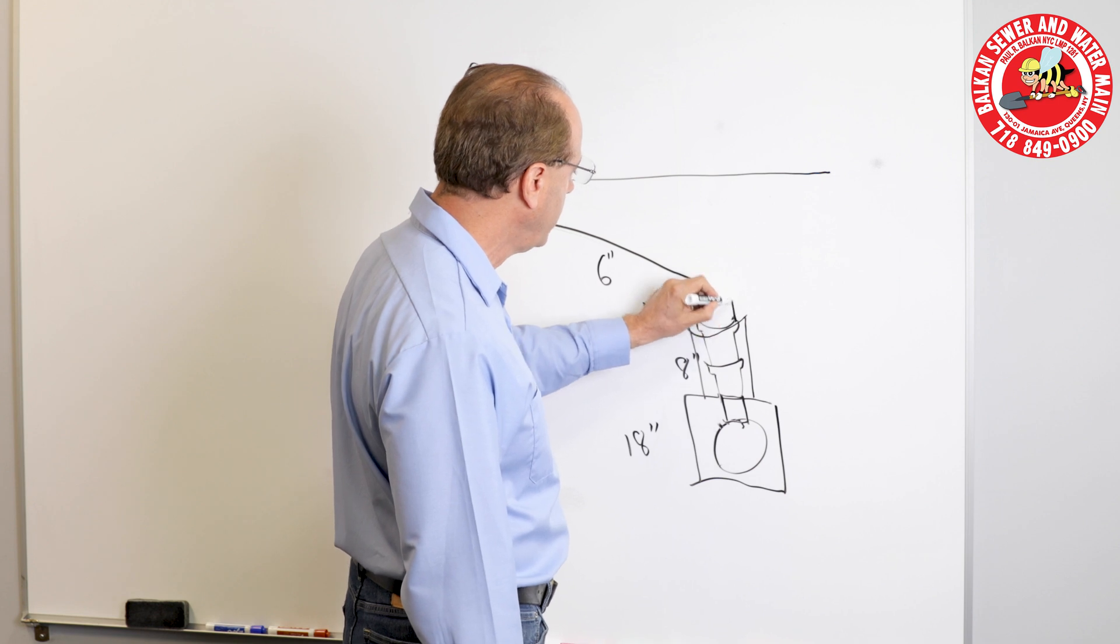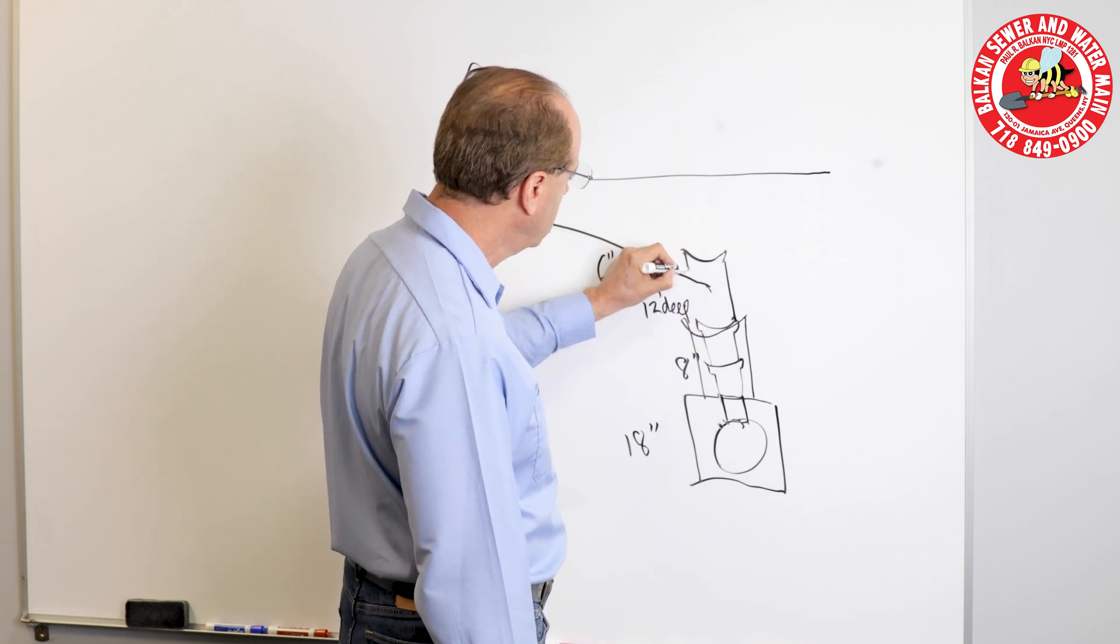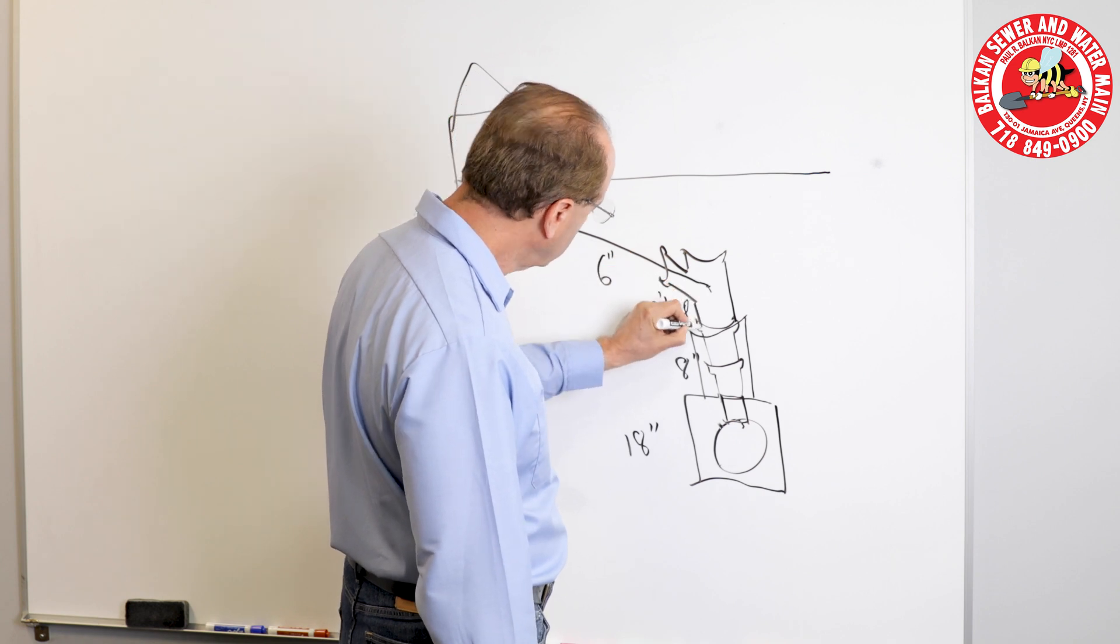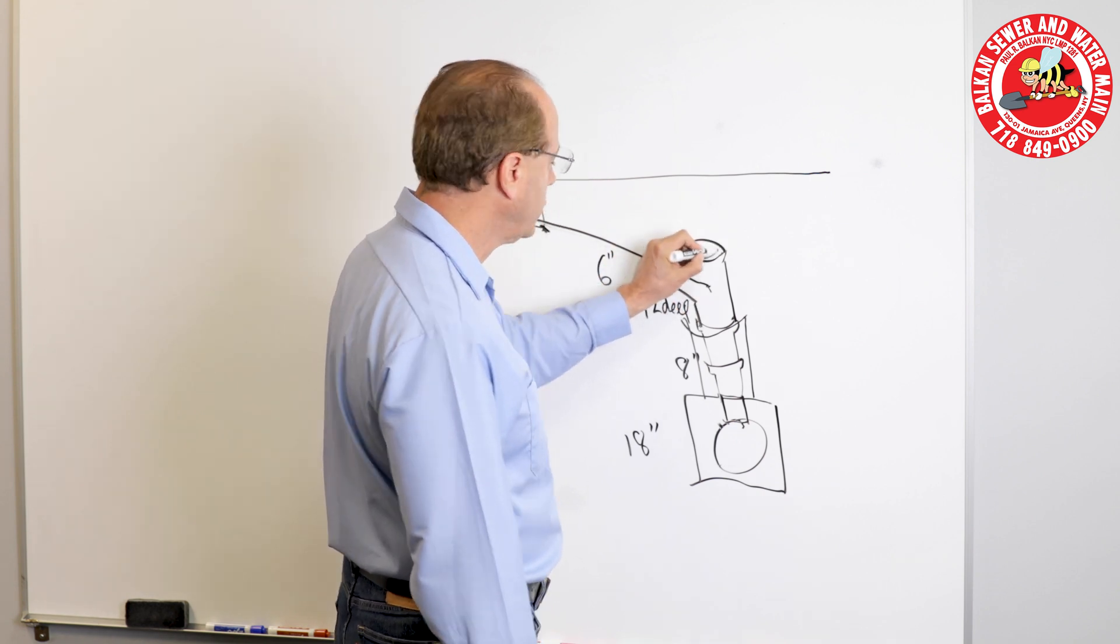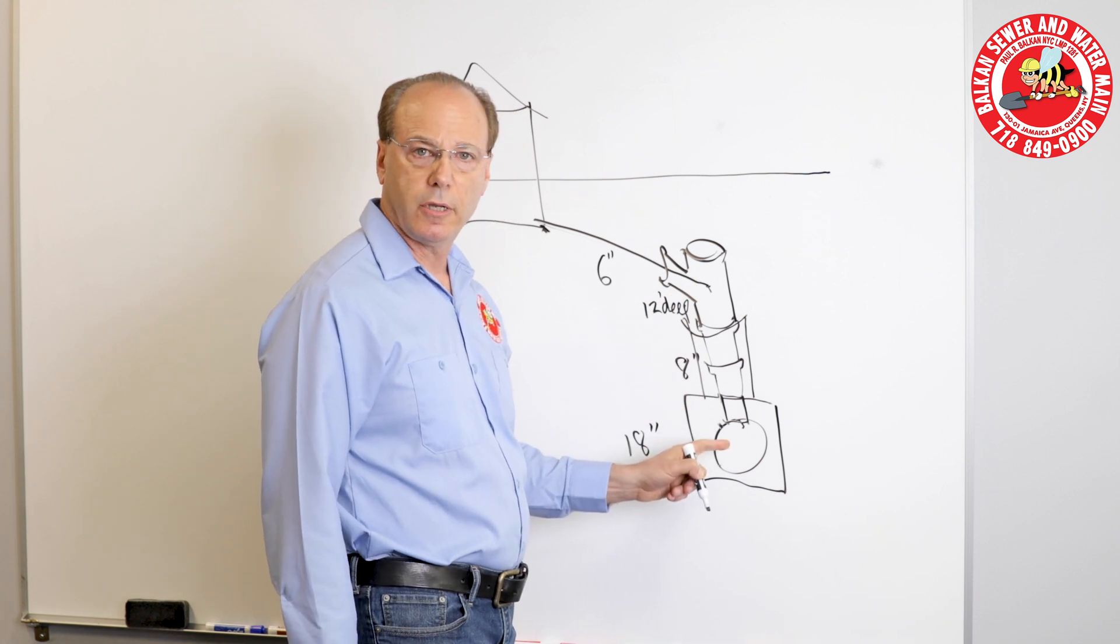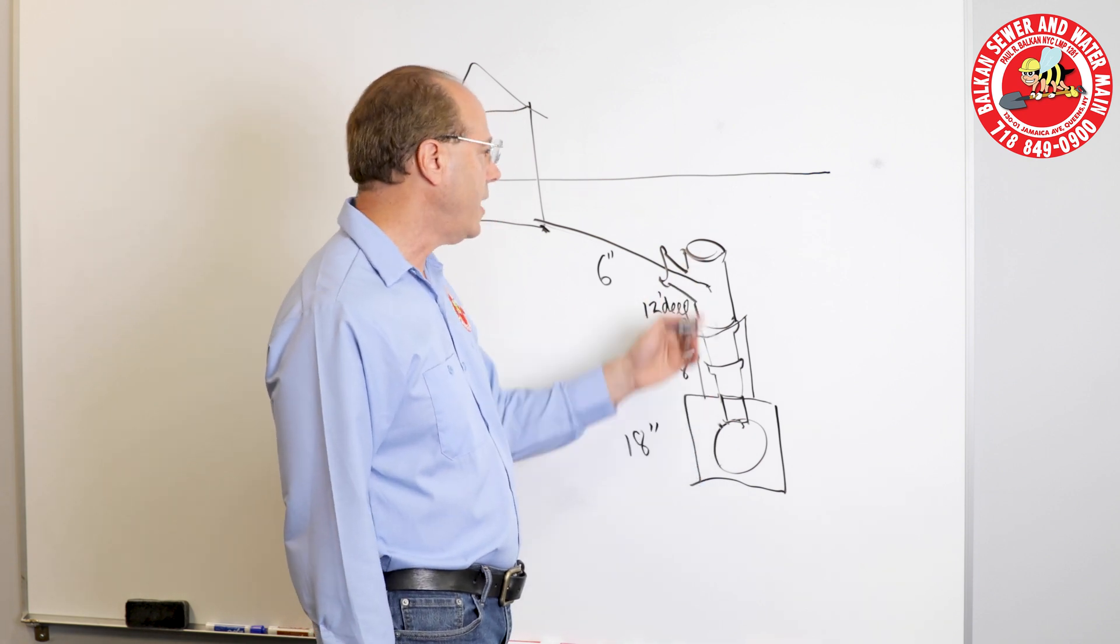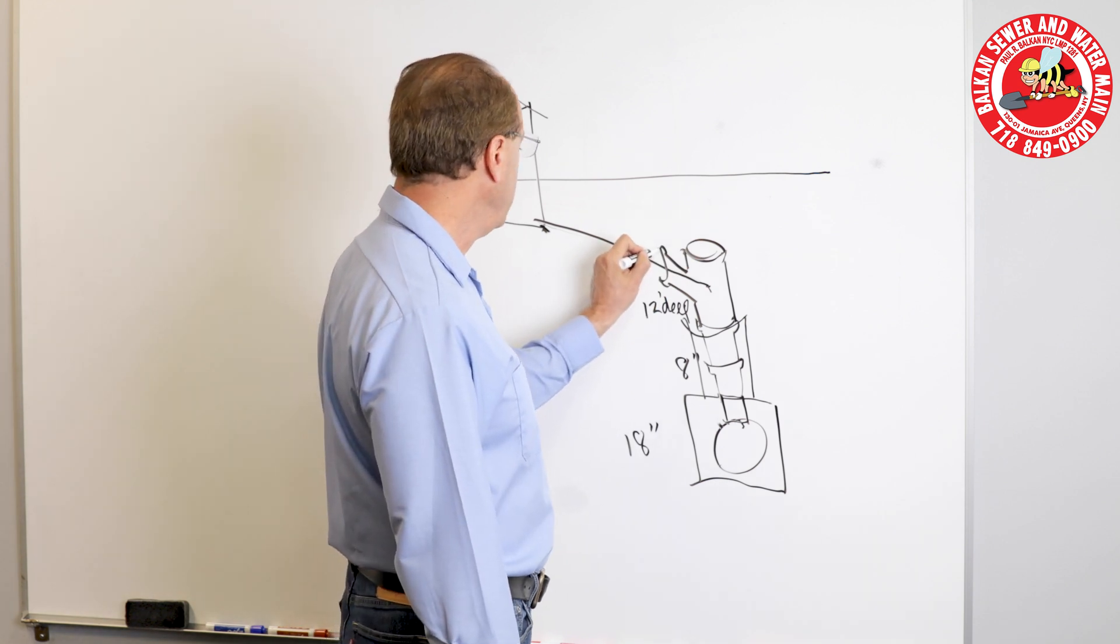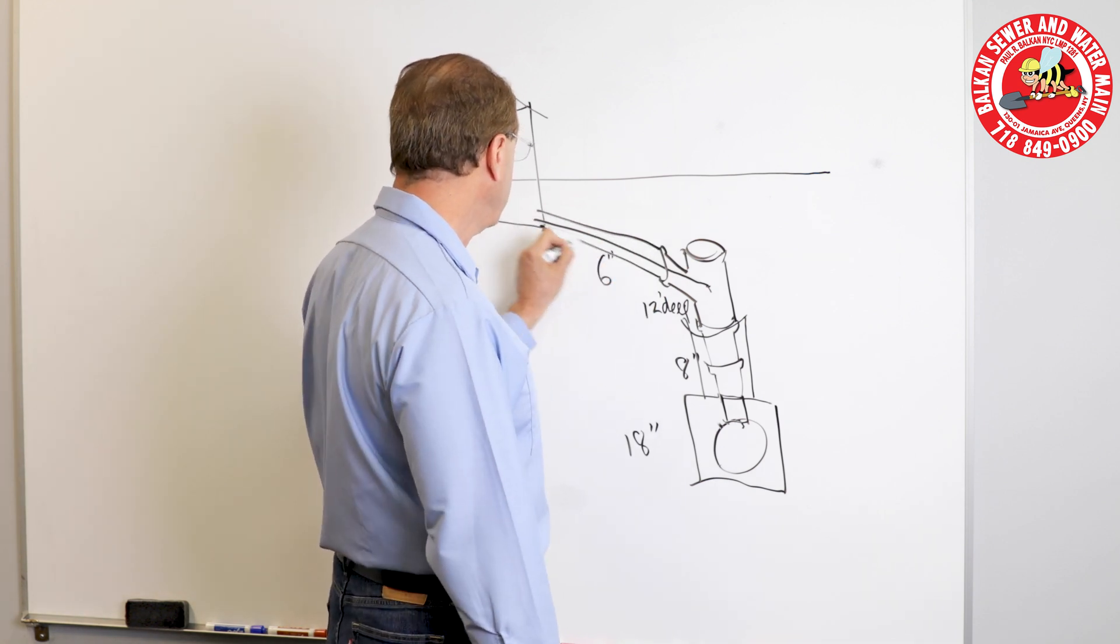On top of this is typically a Y. The Y part is your connection. The top is used as a cleanout. If the riser were ever to be clogged, there's a way to clean it out. Of course, it's going to be backfilled and buried, and then that would be the connection that you would connect to.